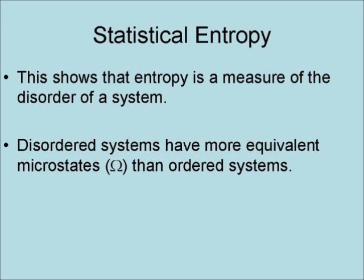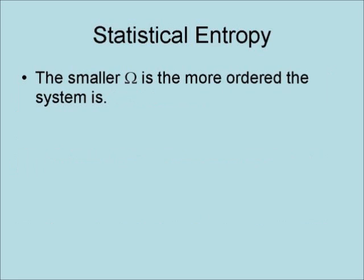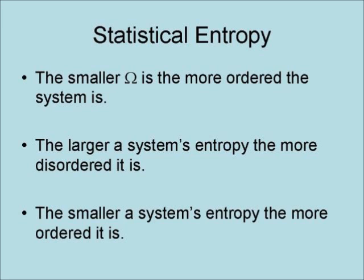This shows that entropy is a measure of the disorder of a system. Disordered systems have a greater number of equivalent microstates than ordered systems. The larger omega is, the more disordered the system is. Consequently, the smaller omega is, the more ordered the system is. As a result, the larger a system's entropy, the more disordered it is, and the smaller a system's entropy, the more ordered it is.